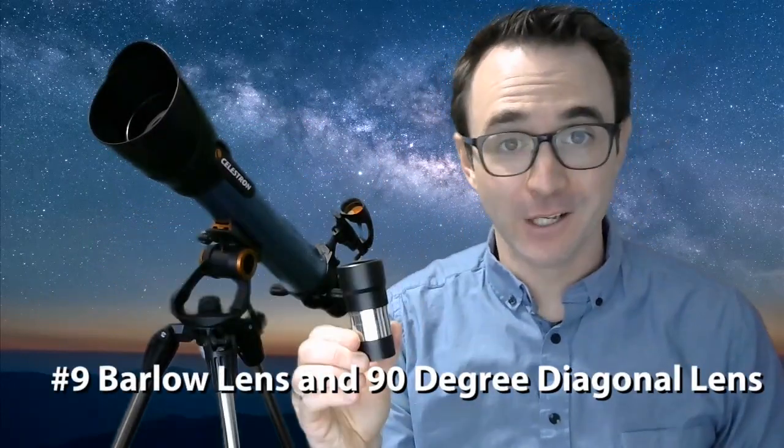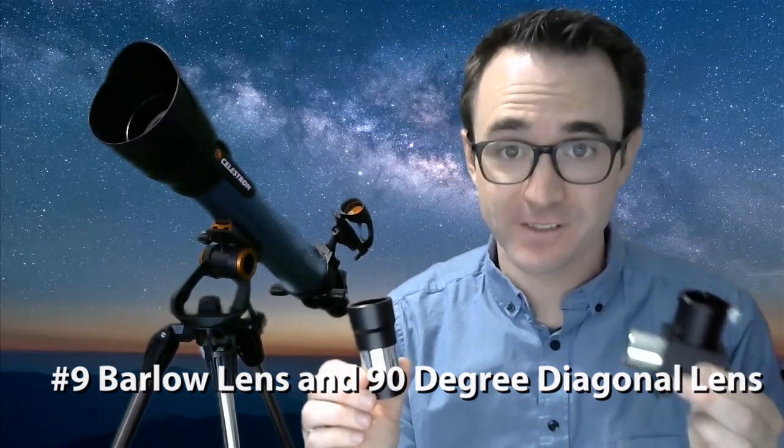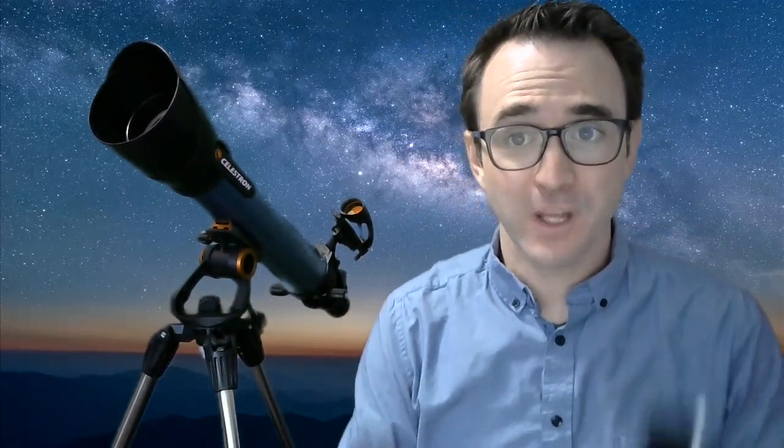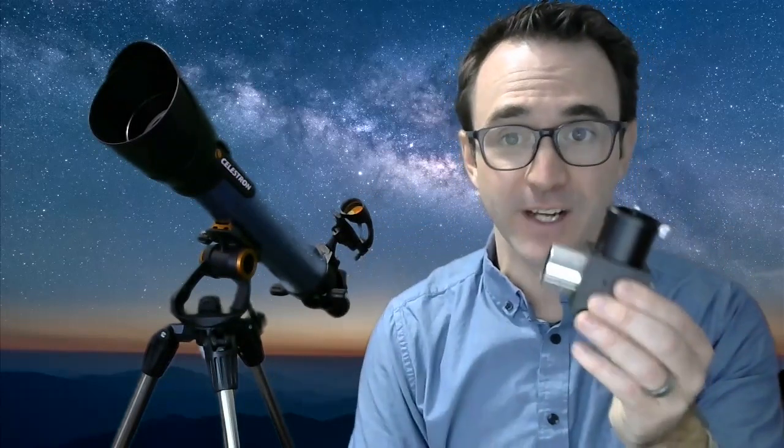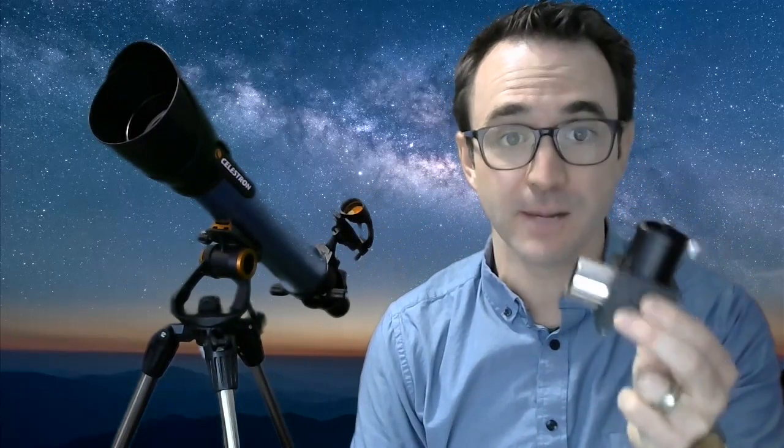Number nine, Barlows and 90 degree diagonals. If you've bought someone a telescope, check to see if it comes with each of these. Because some telescopes only come with a 45 degree diagonal. And these are for looking at things on land, not for looking at things in space. If you want to comfortably look at things in space, you'll need to upgrade to the 90 degree diagonal option.